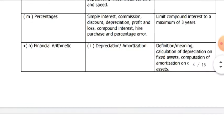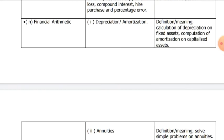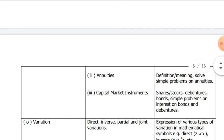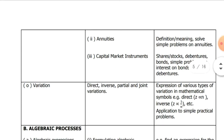You should limit simple interest and compound interest to a maximum of three years. Then you should do financial arithmetic, which has to do with depreciation and amortization, annuities, capital market instruments. Then you should do variations: direct variation, inverse variation, partial and joint variations. These are the topics that will come out in mathematics this year.